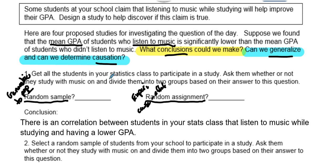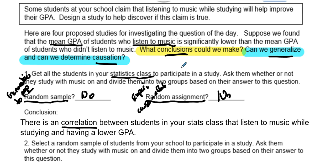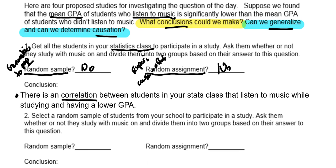Study 1: Get all the students in your stats class to participate — ask them whether or not they study with music and divide them into groups based on their answers. Was there a random sample? No. Was there random assignment or treatment? No. So all we can do is observe a correlation. There appears to be a relationship between students in the stats class who listen to music while studying and having a lower GPA. No generalization, no cause and effect.